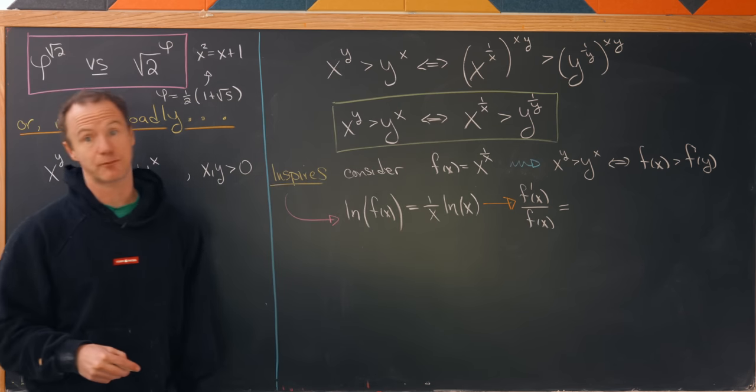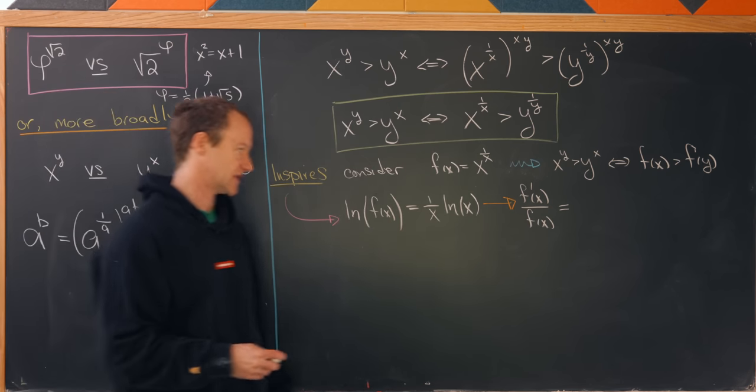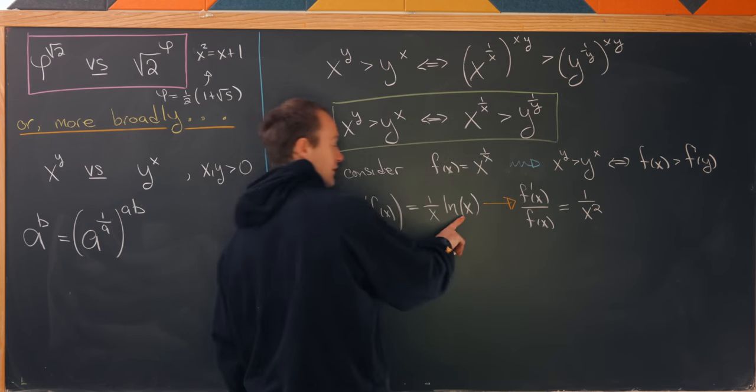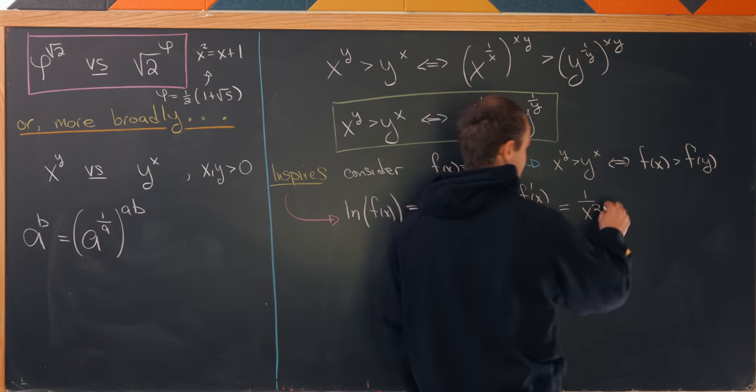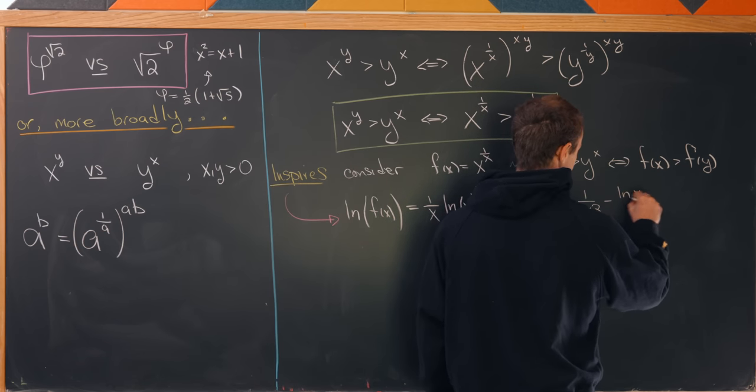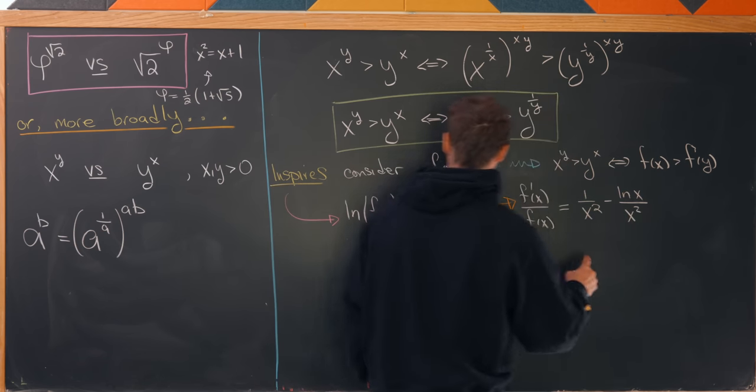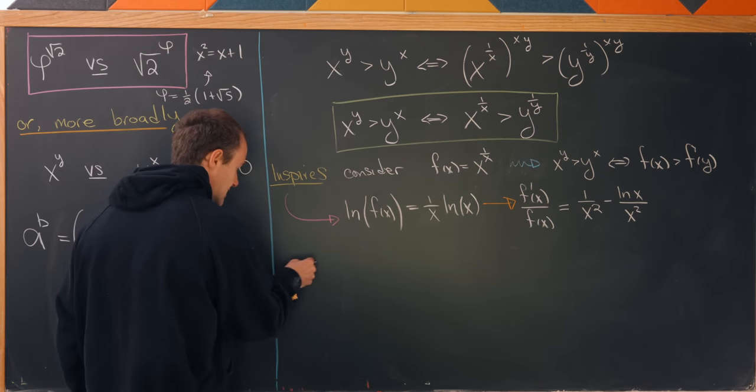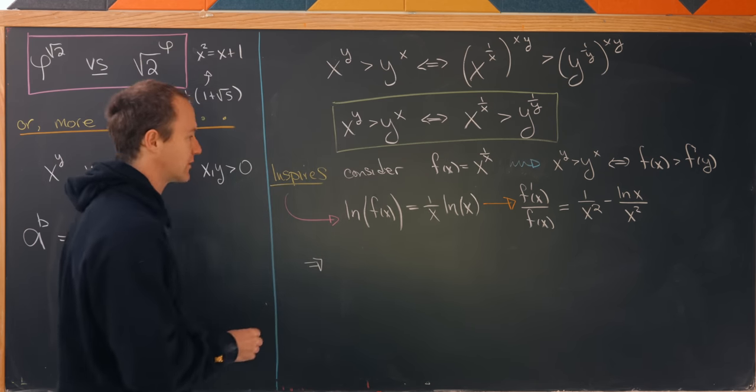well we've got to use the product rule on the left hand side. We'll have 1 over x squared from taking the derivative of the natural log of x and then we'll have minus natural log of x over x squared from taking the derivative of 1 over x. So in the end that gives us a nice formula for the derivative.